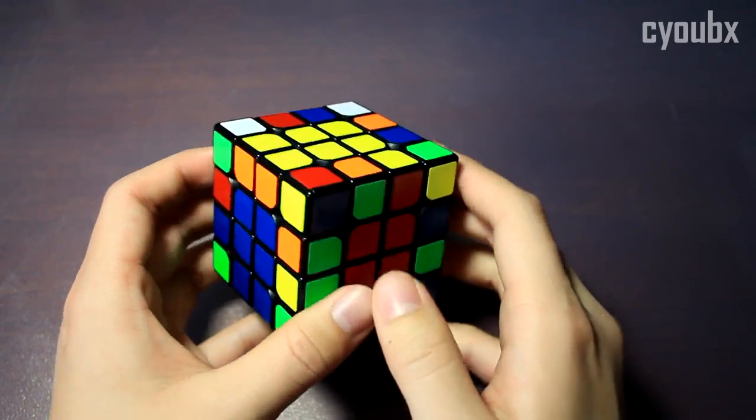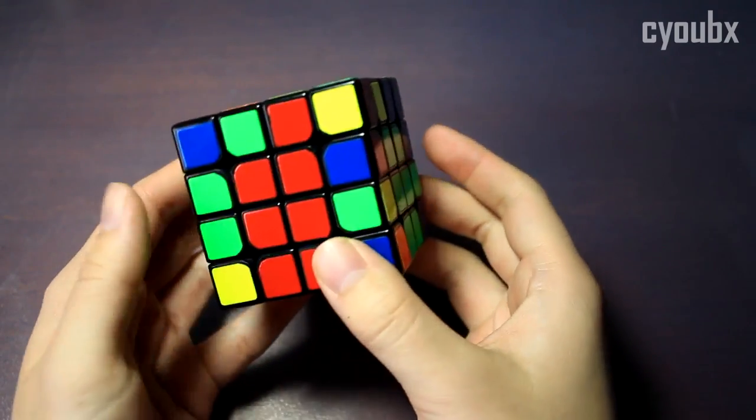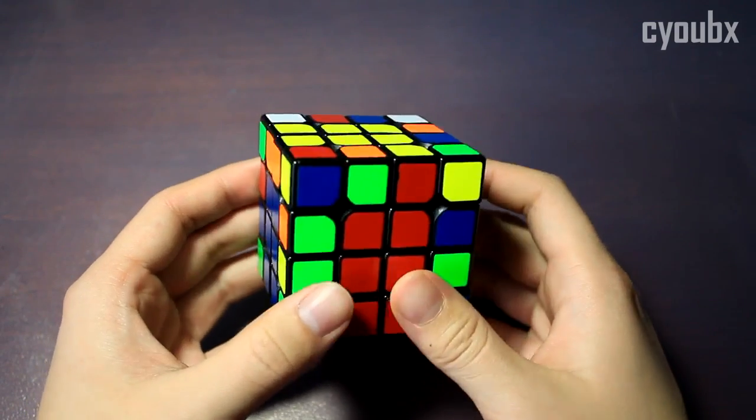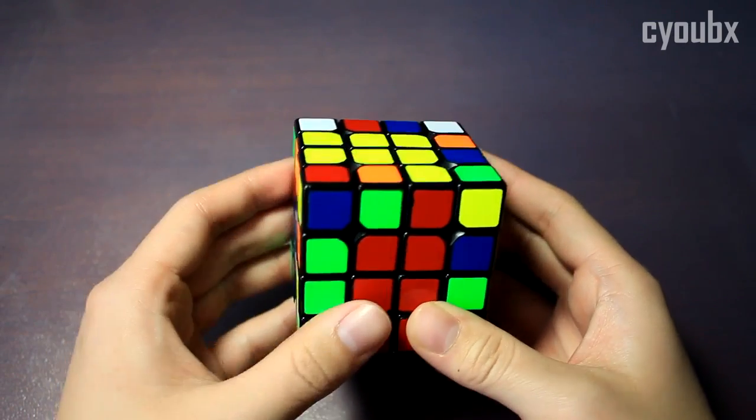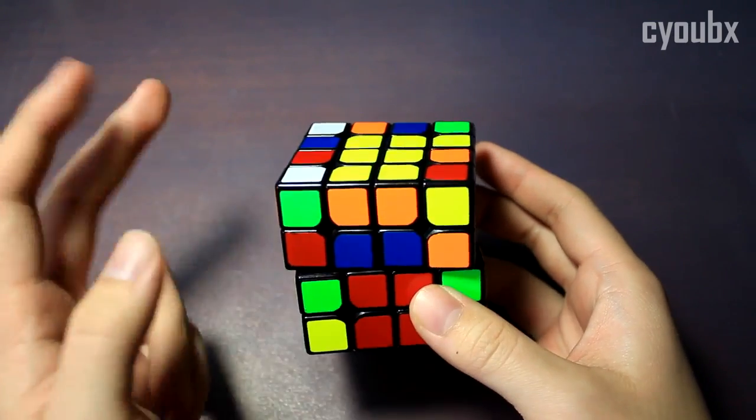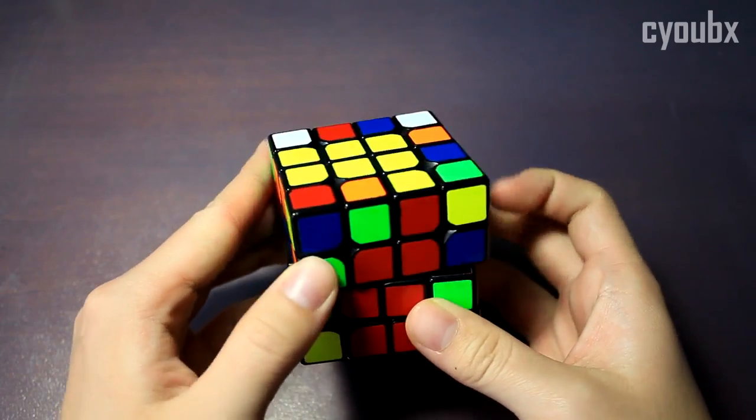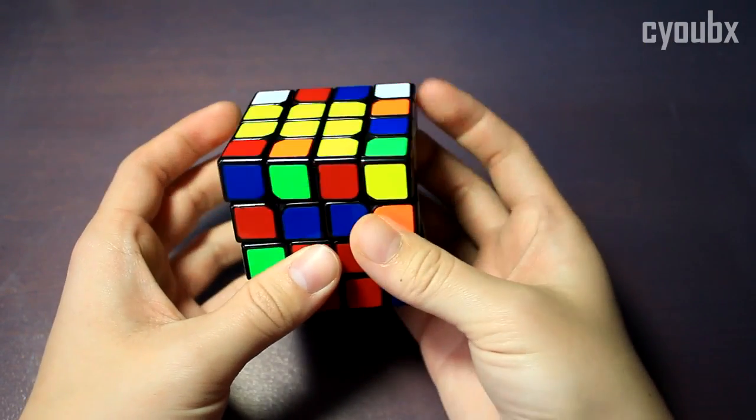Again, you could have one of them done, but in this case, it would be in the top layer and all the ones in the E layer or in the E slice are not solved. In this case, you could do a few different things. You could bring this down and then do what I just talked about, or you could ignore it and slice and then pair two so that you end up with three. I don't really recommend that.